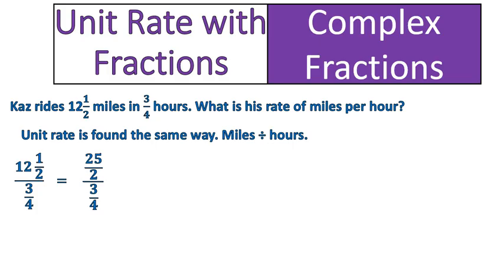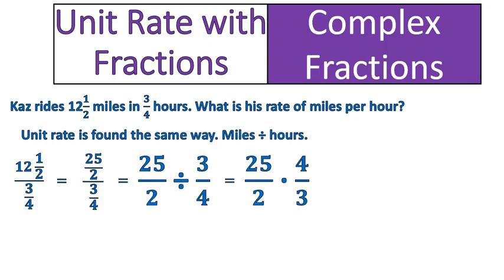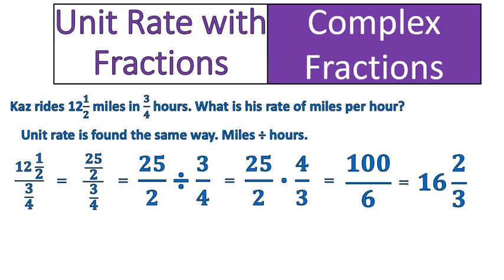We can simplify this into an improper fraction over a fraction, but we need to remember that a fraction means division. So this is 25 over 2 divided by 3 over 4. The rule for dividing fractions is that you multiply by the reciprocal, so it would be 25 over 2 times 4 over 3. Notice our second fraction is flipped over. Then we multiply numerator times numerator — 25 times 4 gives us 100 — and denominator times denominator — 2 times 3 gives us 6. Then we simplify this fraction.